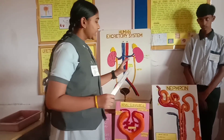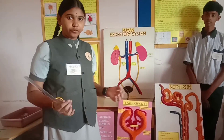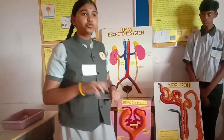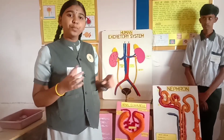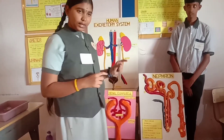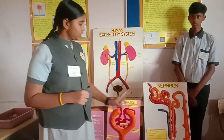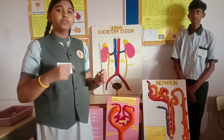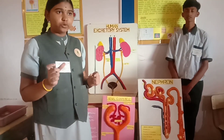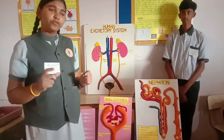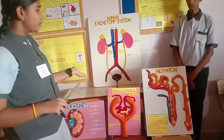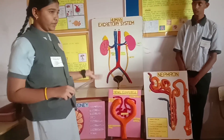The collecting duct is common for many nephrons. The nephrons are of two types based on the loop of Henle size: cortical nephrons where the loop of Henle is very short, and juxtamedullary nephrons where the loop of Henle is very long. This is about the structure of the nephron.